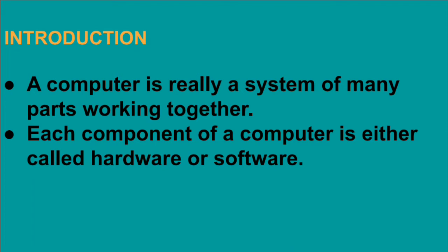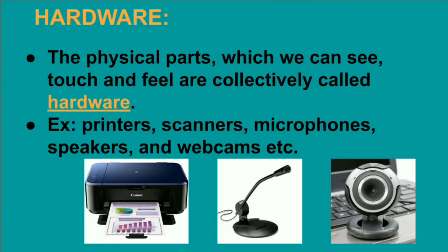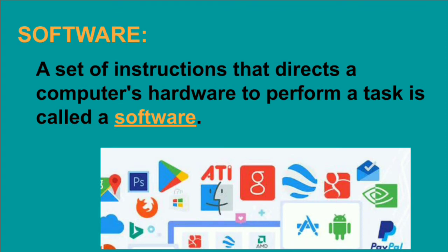Keyboard, mouse, monitor, and CPU are our hardware. The physical parts which we can see, touch, and feel are collectively called hardware. Examples include printers, scanners, microphones, speakers, and webcams.